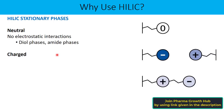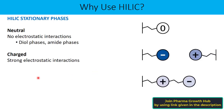The second type of HILIC stationary phase is charged. This stationary phase has charged groups — for example, negative functional groups like sulfonate or positive functional groups like quaternary ammonium. A negatively charged stationary phase enables cation interaction or cation exchange, while a positively charged one enables anion exchange, retaining charged analytes with much longer retention time. These stationary phases have strong electrostatic interaction. Examples include plain silica phases and aminopropyl stationary phases.